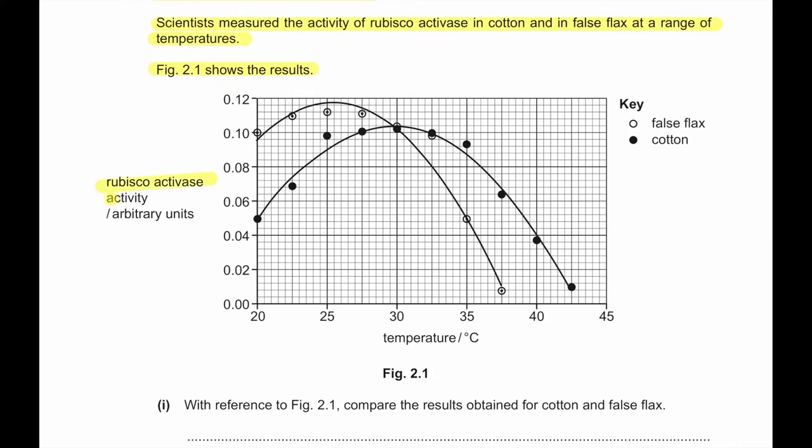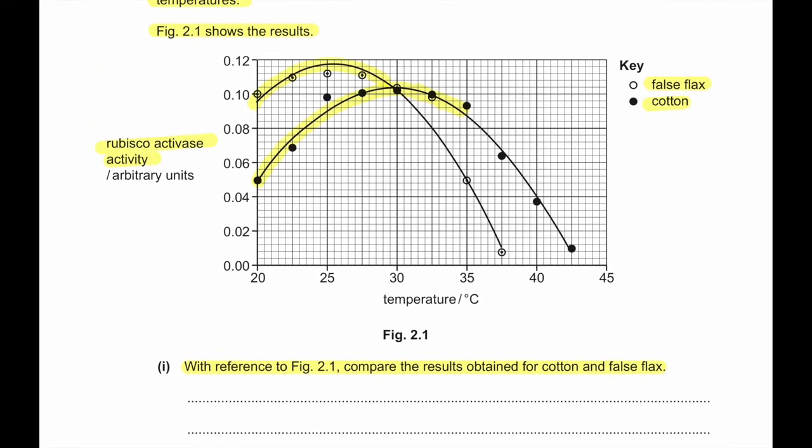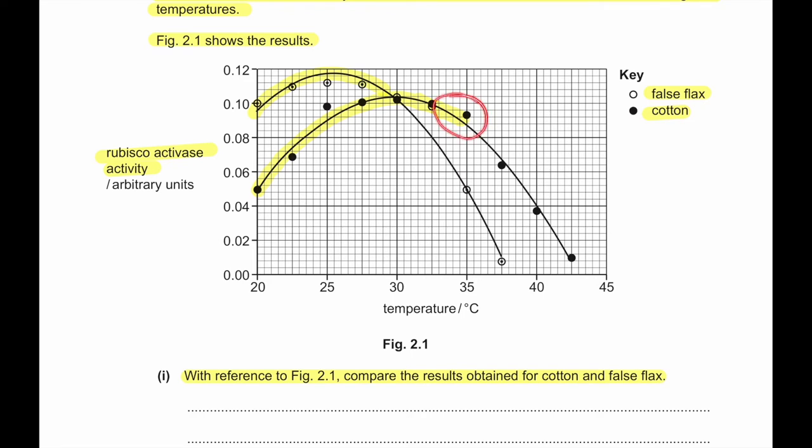Rubisco activase activity in arbitrary units is represented for false flax and cotton. We can see false flax - at lower temperature, false flax has higher activity. Cotton Rubisco activase activity - at higher temperature there is higher activity compared to that of false flax. With reference to figure 2.1, compare the results obtained for cotton and false flax. Obviously, the cotton Rubisco activase has a higher optimum temperature in which it has the highest activity. At higher temperature it has highest activity.